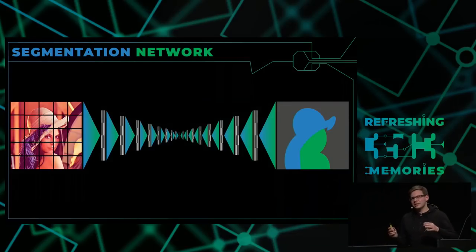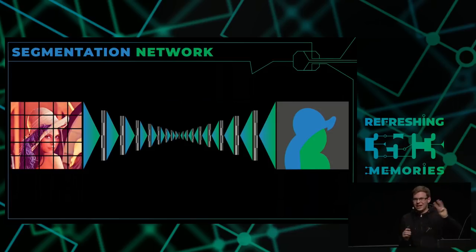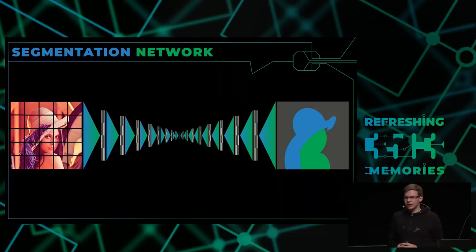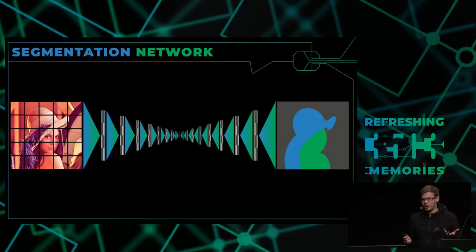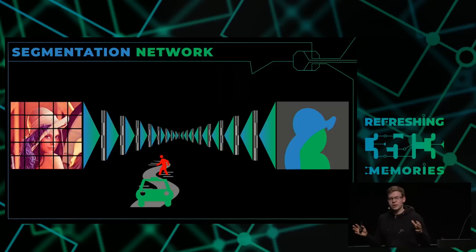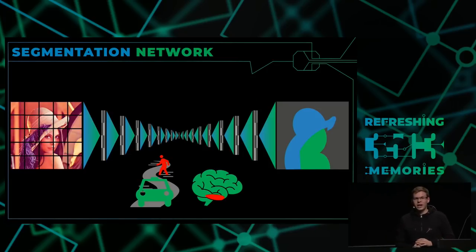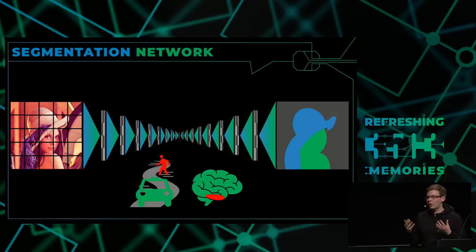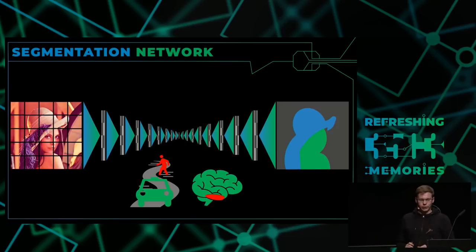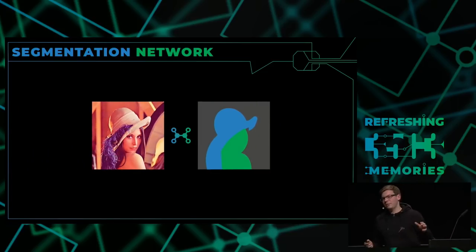Wir können auch noch einen Schritt weiter gehen: wir wollen die Informationen im Bild in einer anderen Repräsentierung kodieren. Wenn wir zum Beispiel drei Klassen haben — Hintergrund in Grau, Hut oder Hutschmuck in Blau, und Person in Grün. Das kann man auch in anderen Dingen benutzen: wenn wir ein Bild einer Straße haben und zeigen wollen, wo es einen Fußgänger gibt. Oder bei einem MRI-Scan eines Gehirns — wo ist der Tumor? Das können wir mit Methoden wie diesen lernen, wenn sie sinnvoll trainiert werden.